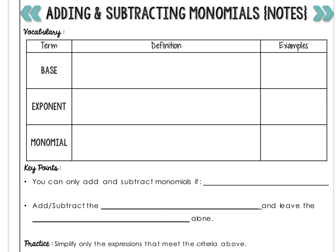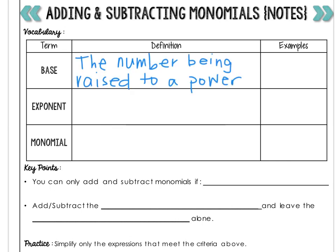Let's first define the terms base, exponent, and monomial. In an exponent, the base is the number being raised to a power. So for example, in 5 to the x power, the 5 is the base.